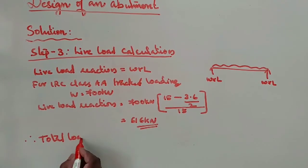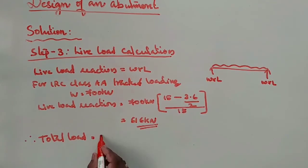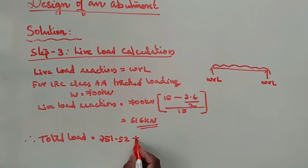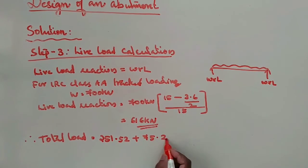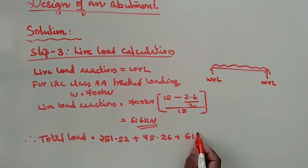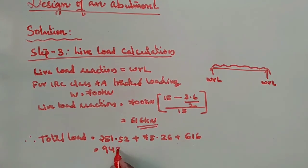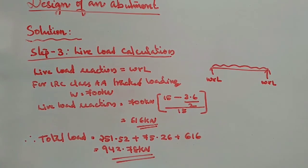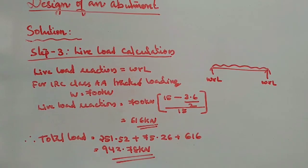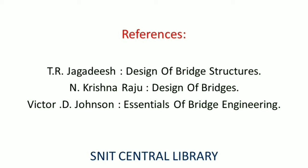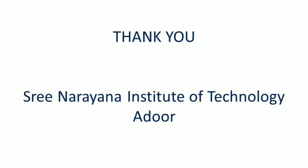Total load = self-weight + dead load + live load reaction = 251.52 + 75.26 + 616 = 942.78 kilonewtons. In this session we concluded that the total load is 942.78 kilonewtons. In the next session we shall compute the earth pressure. Refer the textbooks. Thank you.